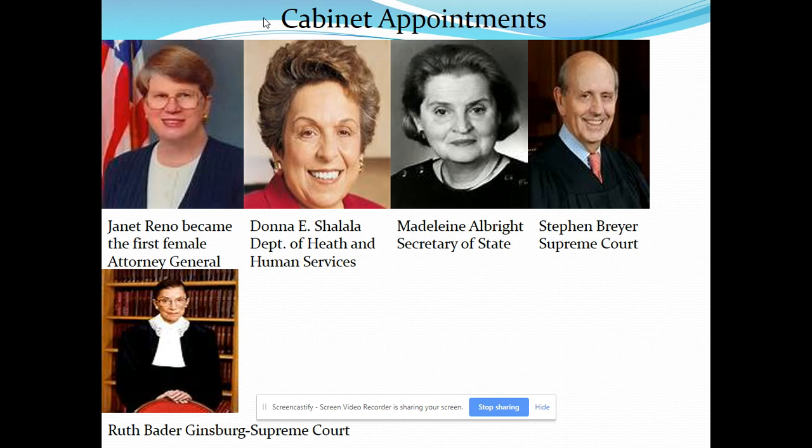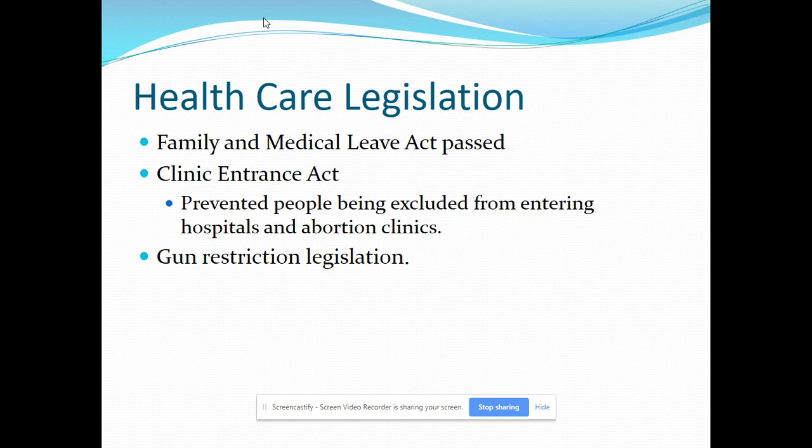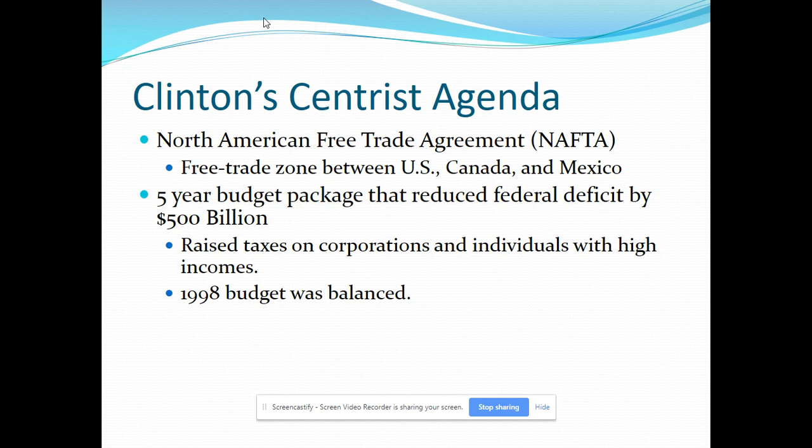Clinton also hired 100,000 new police officers to get tough on crime, which Reagan had also pushed for. Before leaving office, Bush had signed the NAFTA trade agreement, which provides free trade between Canada, Mexico, and the U.S. Manufacturers looking for new markets and cheap Mexican labor supported NAFTA, but labor unions were adamantly opposed. Clinton got criticism for being willing to go forward with it.